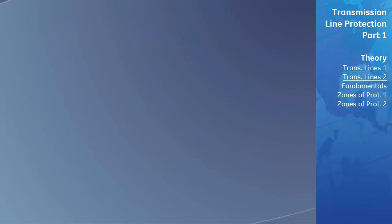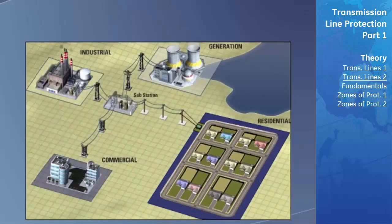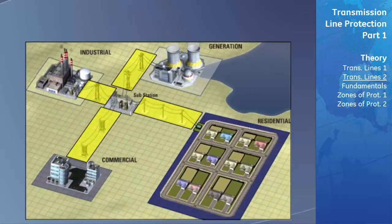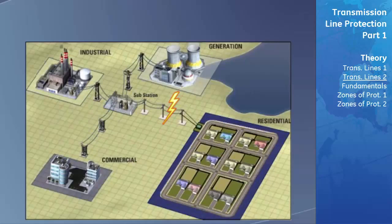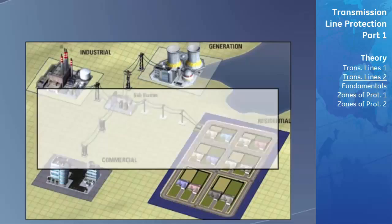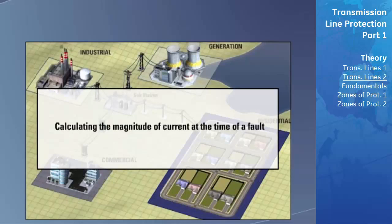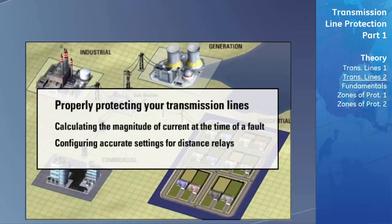The importance of transmission lines in a power system is quite evident. They are responsible for transmitting large amounts of current at possibly very high voltages. If a fault occurs on a transmission line and it is not cleared properly and quickly, the stability of the entire system can be compromised. The longer the fault is allowed to remain on the line, the higher the possibility that the system will become unstable and possibly collapse.